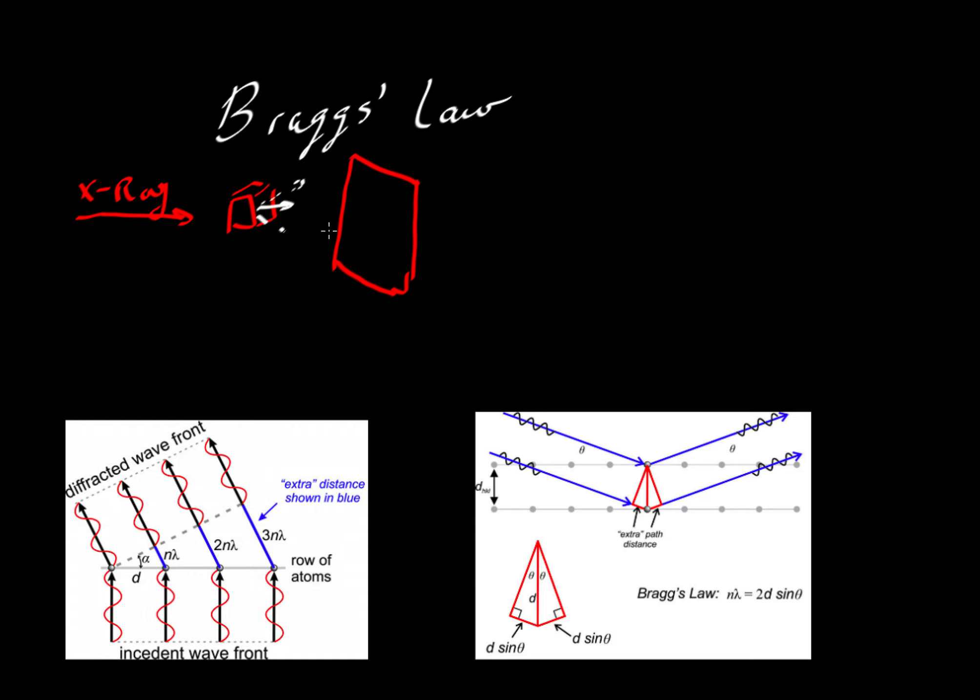What they found in their experiments when they exposed the film is that the energy would be concentrated on certain little parts of the film. They'd get a series of dots and those dots would have some kind of symmetry to them that would reflect the internal symmetry of the atoms inside of the crystal. This set of patterns here would eventually become known as a so-called Laue pattern. And these experiments were very important because they did a couple of things.